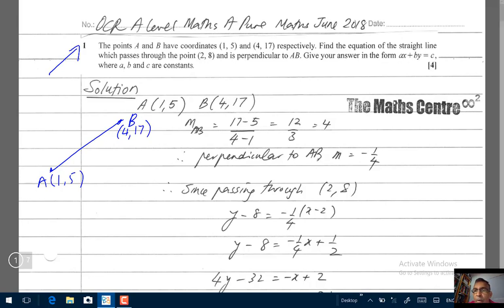Find the equation of the straight line which passes through the point 2, 8 and is perpendicular to AB. So let's just indicate a point here for discussion. This is 2, 8 and perpendicular to AB. So we're trying to find the equation of this line.